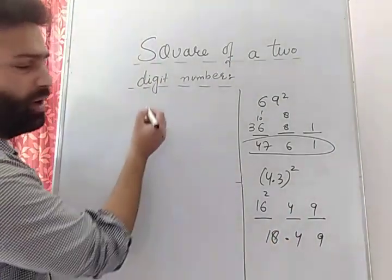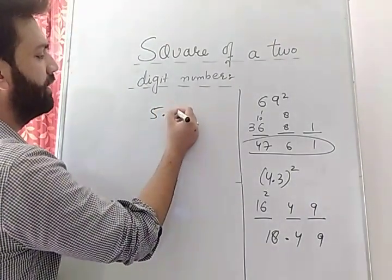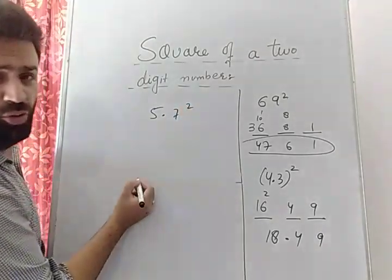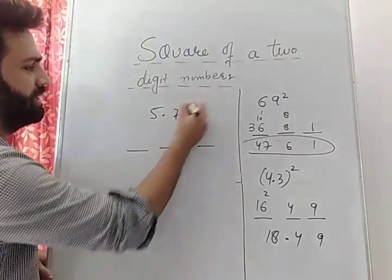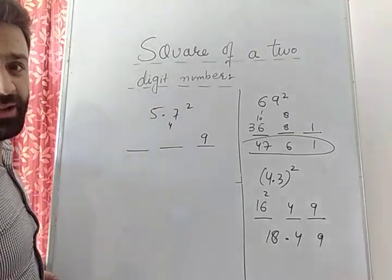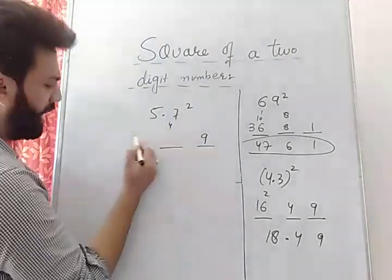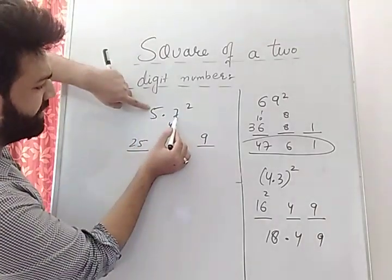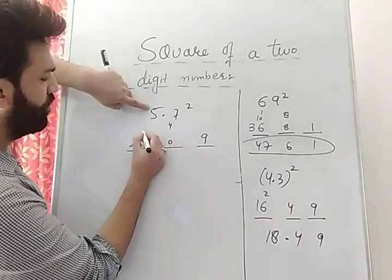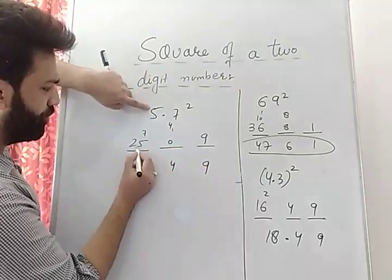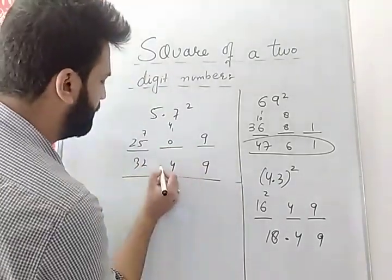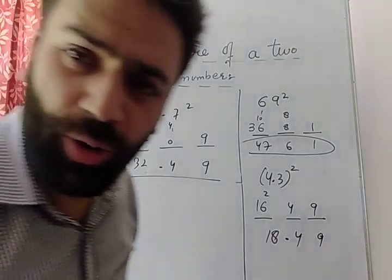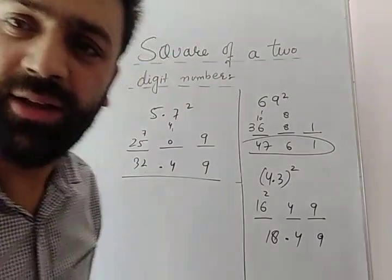Let me take 5.7 squared. Make 3 places. 7 squared is 49 — carry 4. 5 squared is 25. Multiply 5 into 7 is 35, into 2 is 70 — write 0, carry 7. Add it up: 32.49. Place the decimal after two digits.